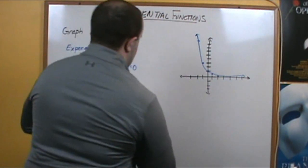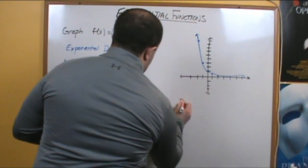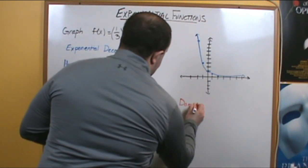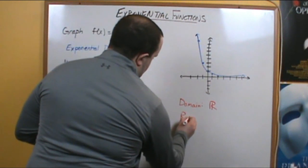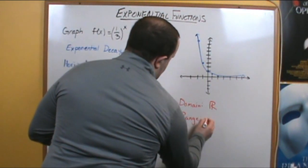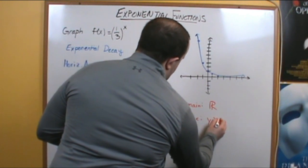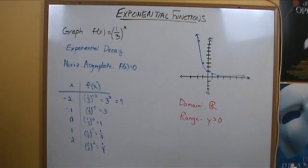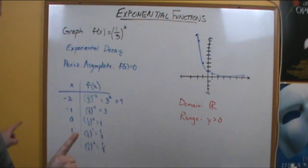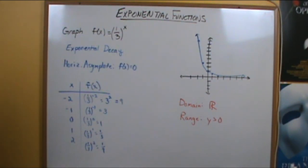For domain and range: the domain of f of x is still all real numbers, and the range is y greater than 0. That's the graph of an exponential decay function. The next example will involve a translation of an exponential function.